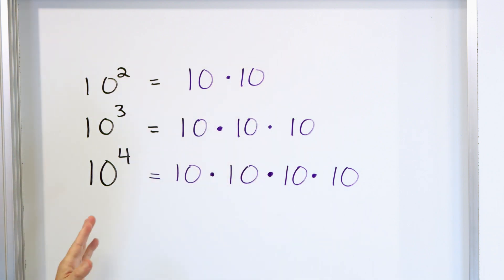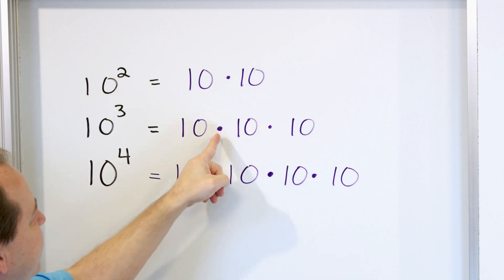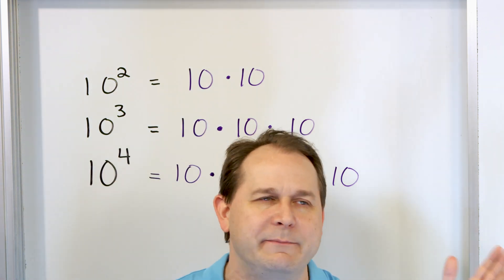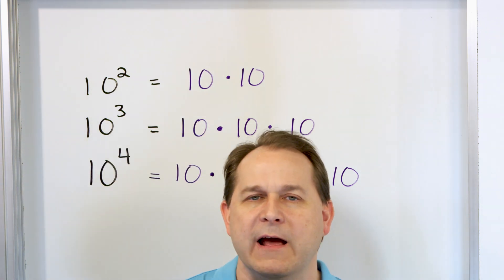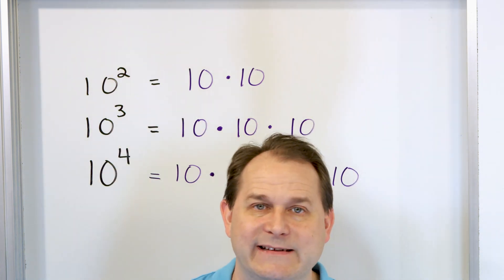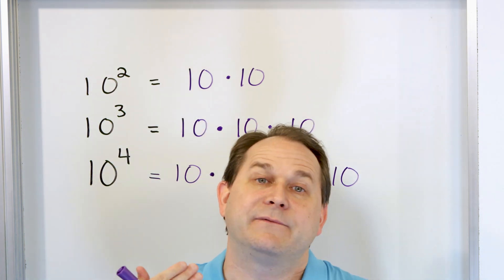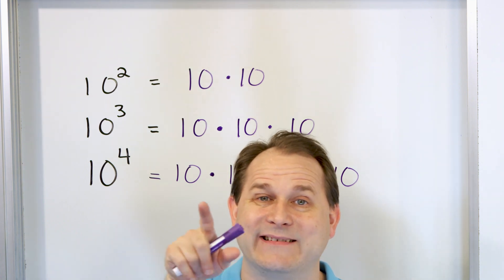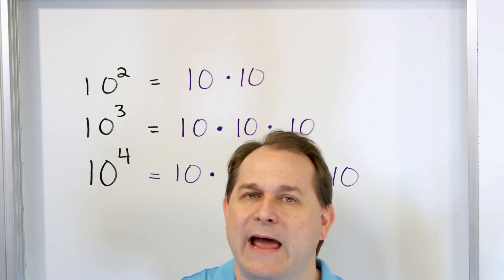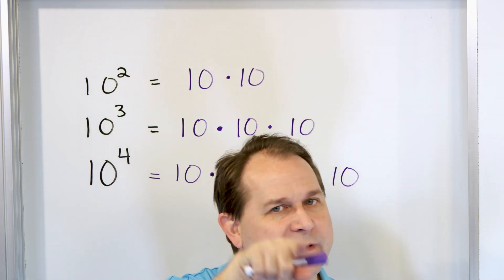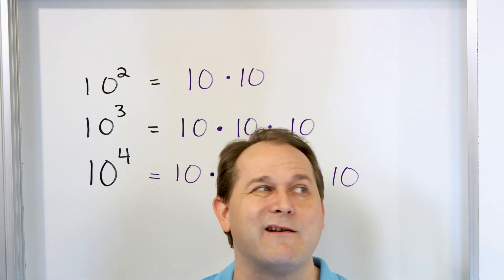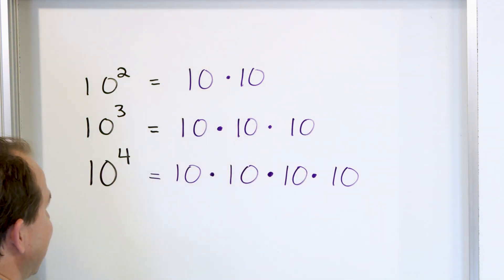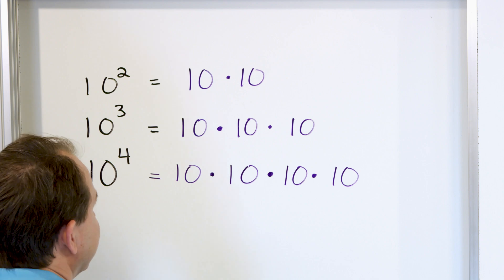So when we take the number 10 and we square it, we just take 10 and multiply it by itself — there are just two 10s. Don't let these dots confuse you. The dots just mean multiplication, the same thing as putting that × there. But we have to drop the × because very soon we're going to be using x for other things in math, and it would be very confusing.